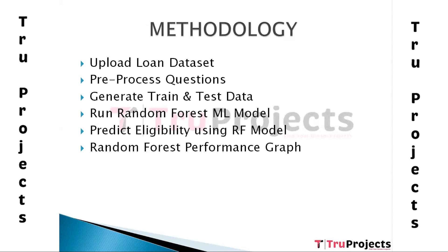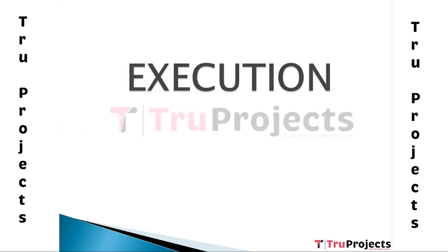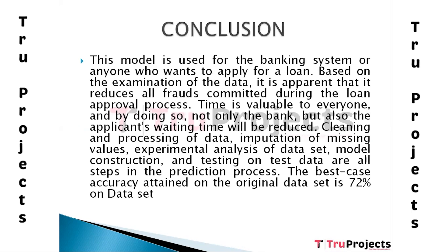The model generates accuracy, precision, recall, and F1 score. The next module, 'Predict Eligibility Using Random Forest Algorithm,' uploads the test dataset and checks the prediction performance. The last module, 'Random Forest Performance Graph,' plots a graphical representation of the model showing accuracy, precision, and the confusion matrix.